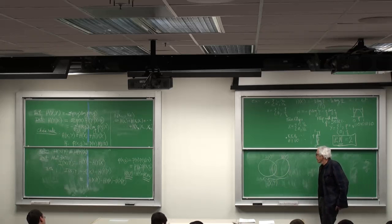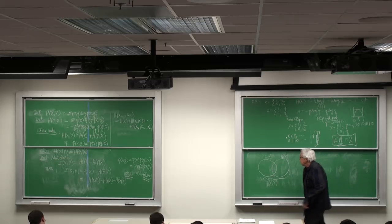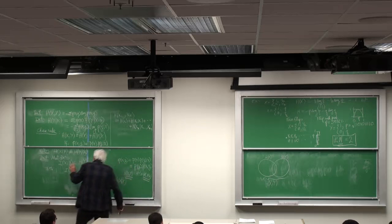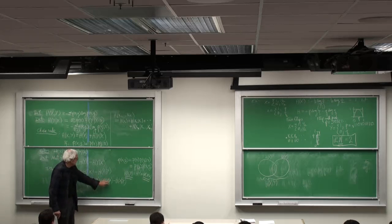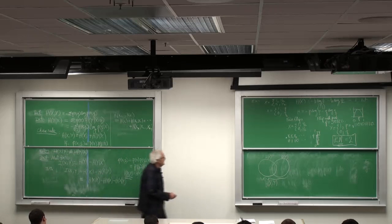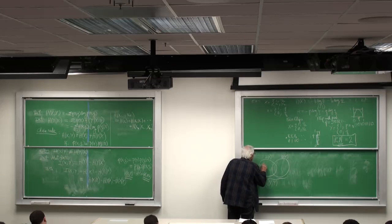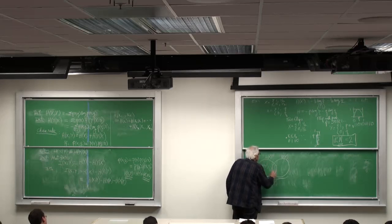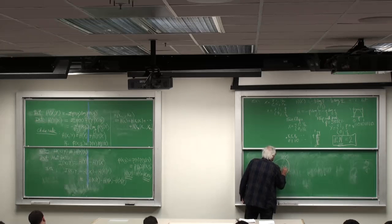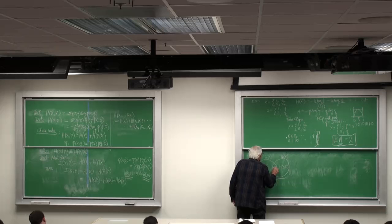But H of X comma Y is I of XY plus these two conditionals. So I could write it this way. This is H of X given Y. This is H of Y given X. And this is I of XY.